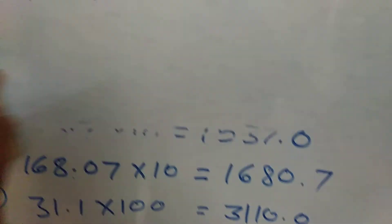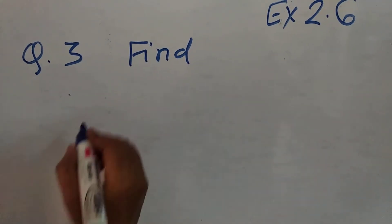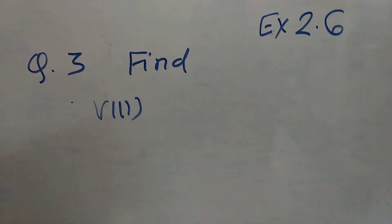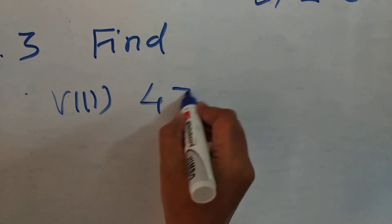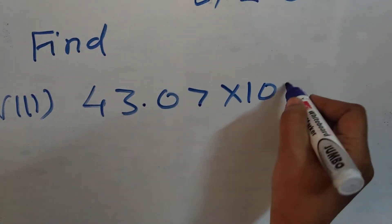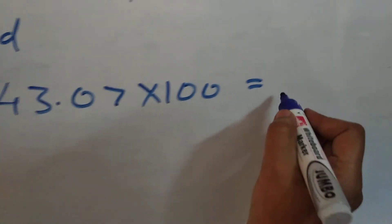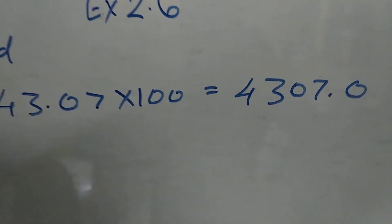Now, eighth one sum, eighth one sum here. Here, 43.07 multiplied by 100 here. So, here, 4307.0.